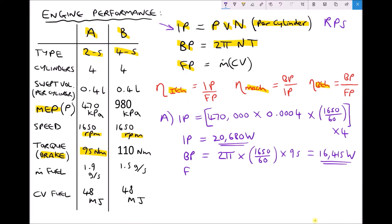Finally we can calculate our fuel power, which is the rate that energy is being delivered as we combust the fuel. We're combusting fuel in the two stroke engine at a rate of 1.9 grams every second. Converting to kilograms: 1.9 divided by 1,000 gives 0.0019 kg/s. Multiplying by the calorific value of 48 megajoules per kilogram (48 × 10⁶), our fuel power equals 91,200 watts.